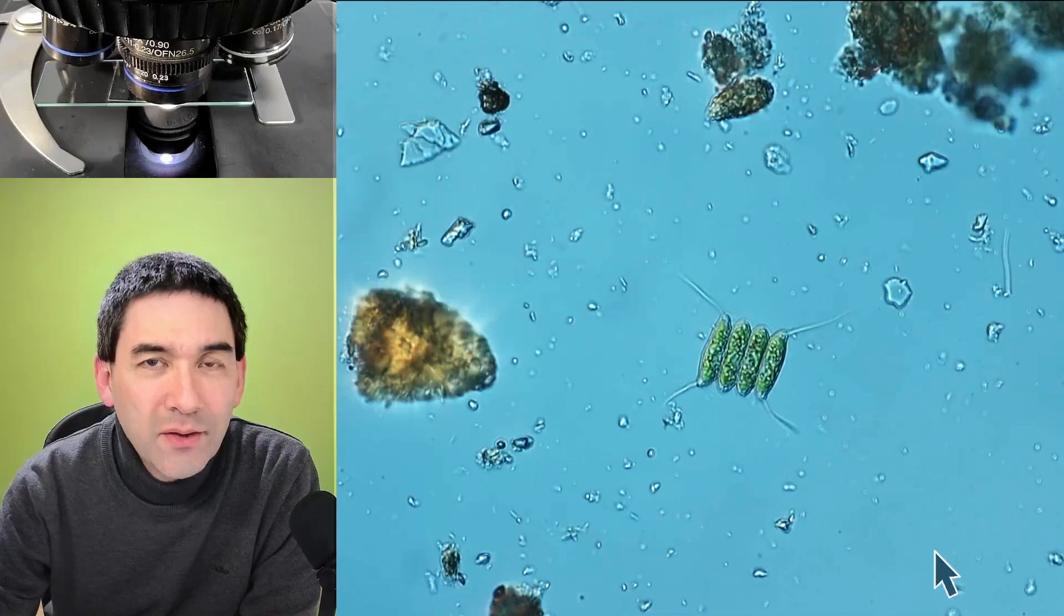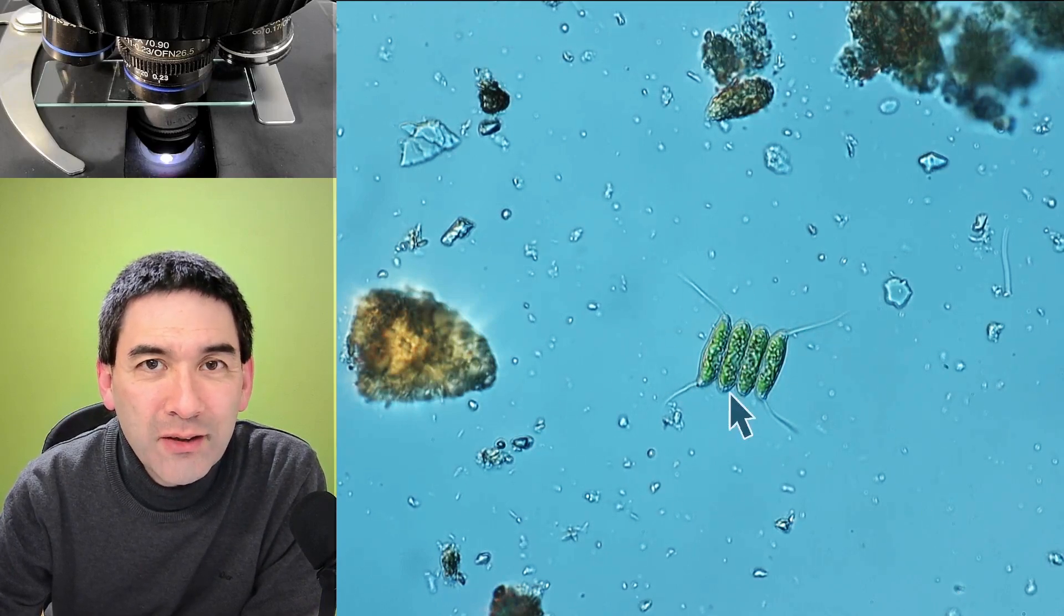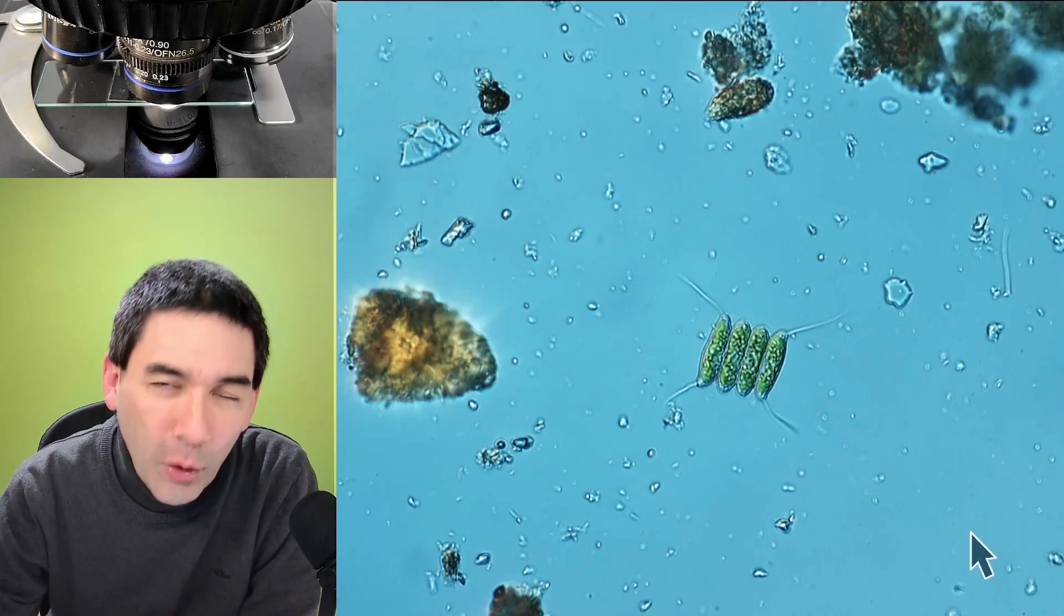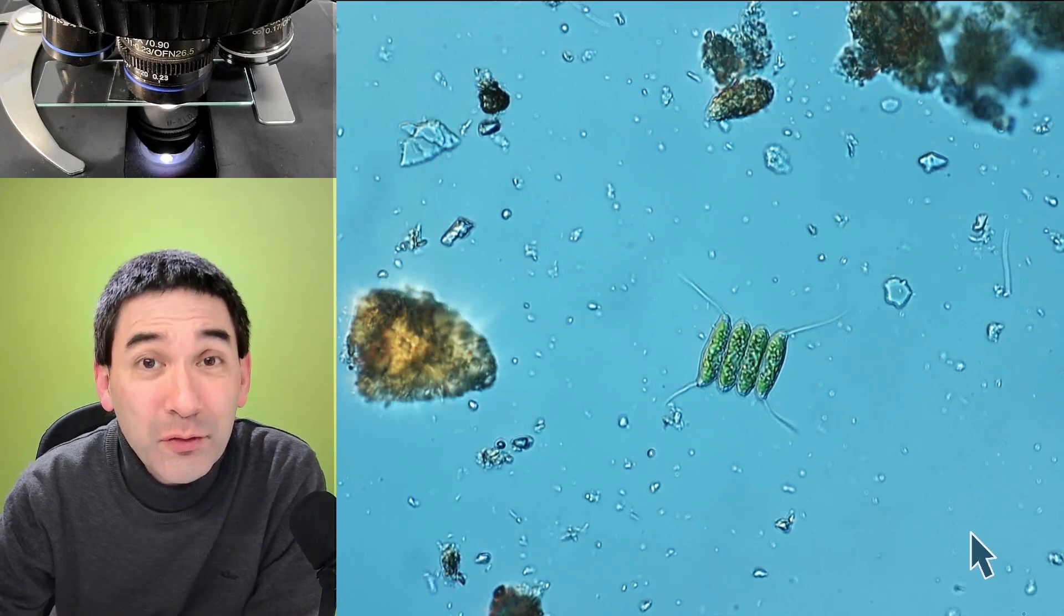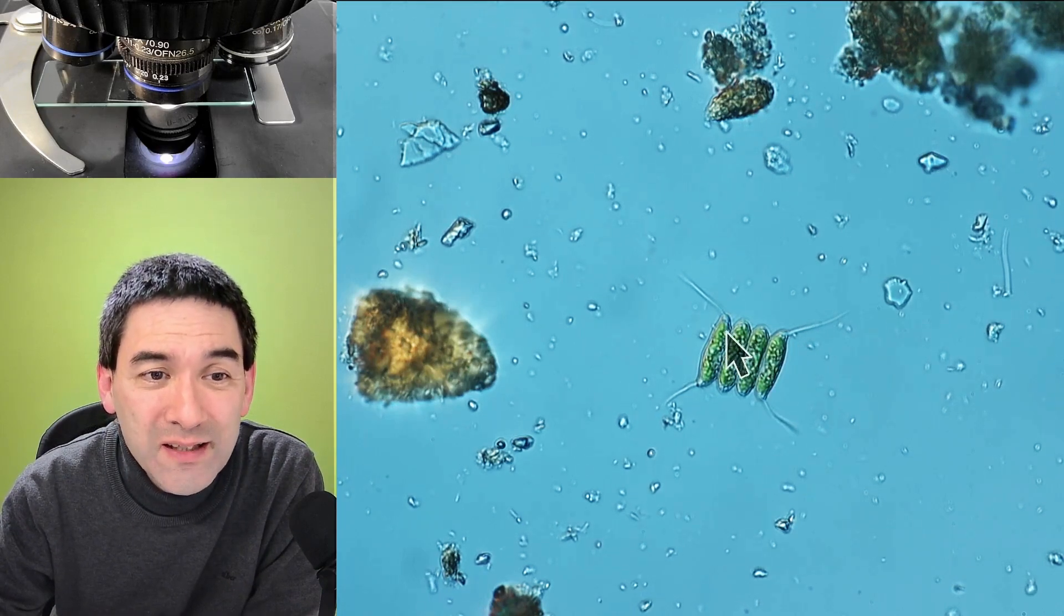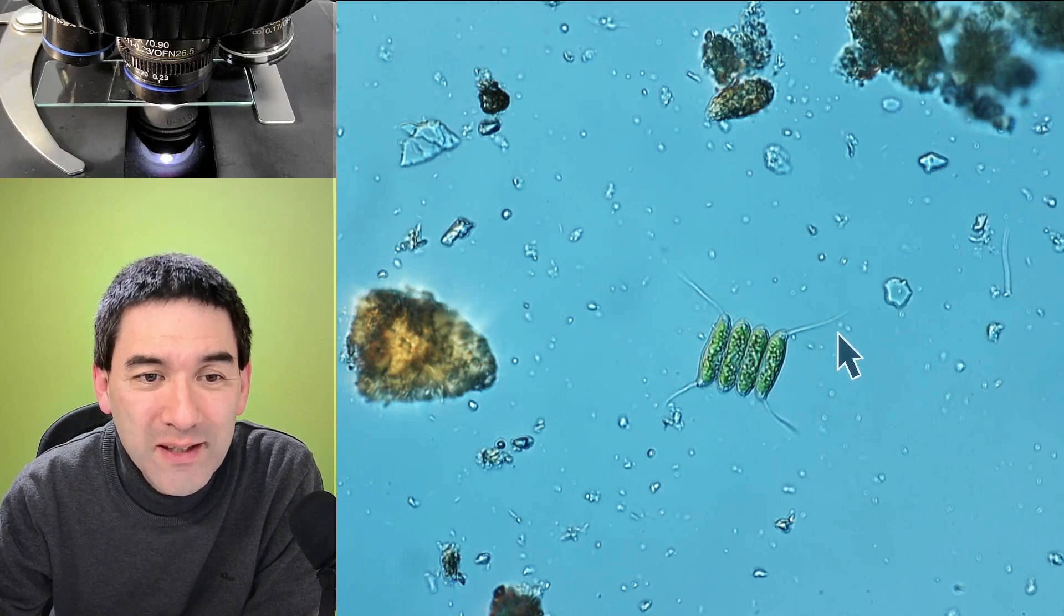So the name of this algae here, it's a green algae, the name is desmodesmus. It's a fairly common observation. For whatever reason they always appear in groups of four and the two outermost cells they always have these long extensions here. Quite nice that I was able to find them also here.